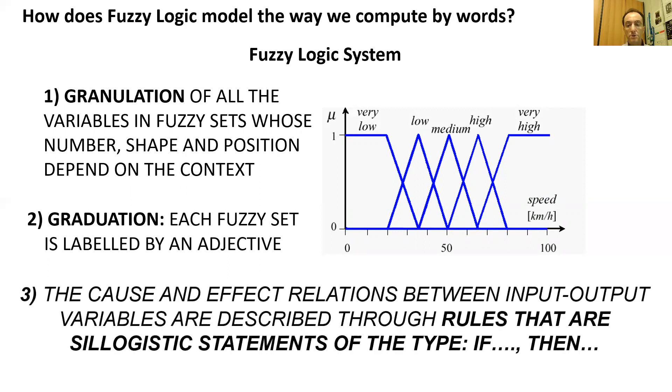Third, the relationships between input and output fuzzy sets are described through syllogistic statements of the type if-then, called fuzzy rules. The if part is the antecedent and involves the linguistic labels chosen for the input fuzzy sets. The then part is the consequent and involves the linguistic labels chosen for the output fuzzy sets. When we have multiple inputs, these are connected through the AND, OR, or NOT operators. Fuzzy rules may be provided by experts or can be extracted from numerical data.